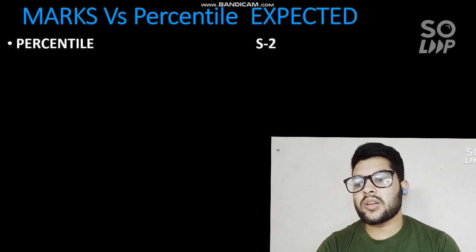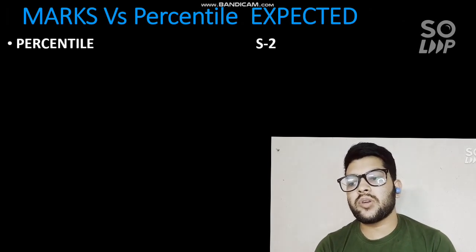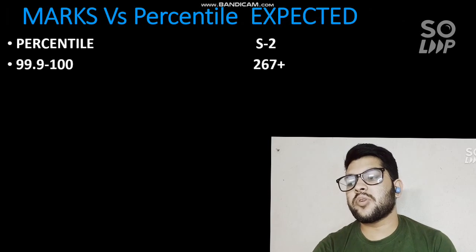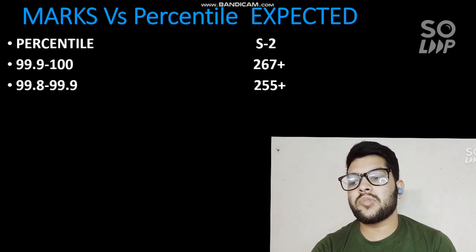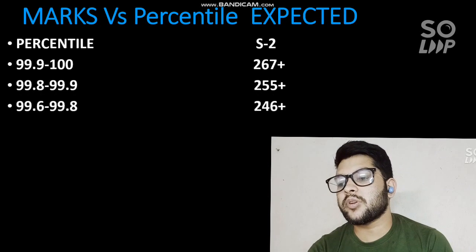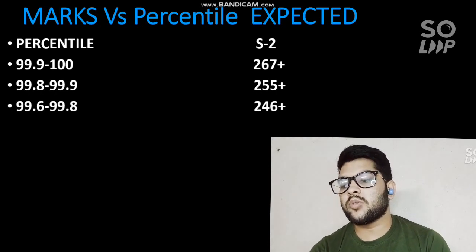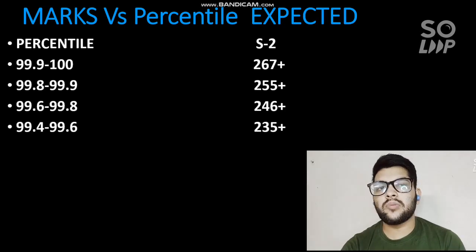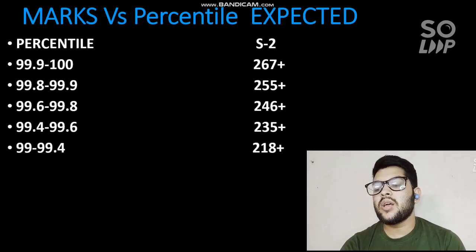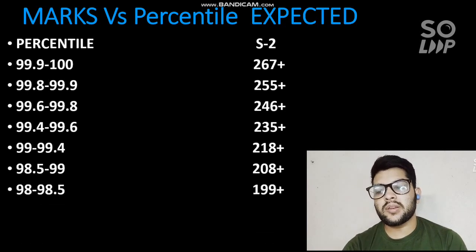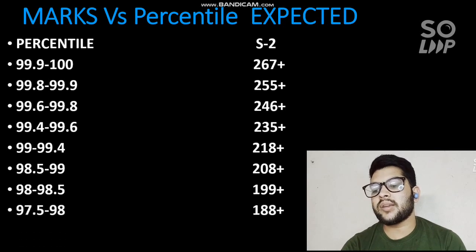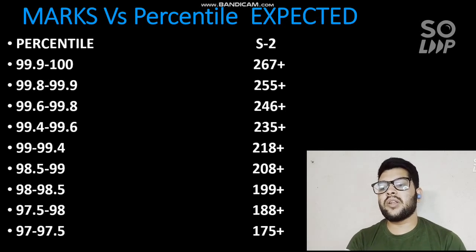For marks versus expected percentile for Shift 2 only: 99.9–100 percentile requires 267+ marks; 99.8–99.9 requires 255+; 99.6–99.8 requires 246+; 99.4–99.6 requires 235+; 99–99.4 requires 218+; 98.5–99 requires 199+; 97.5–98.5 requires 188+; and 97–97.5 requires 175+ marks.